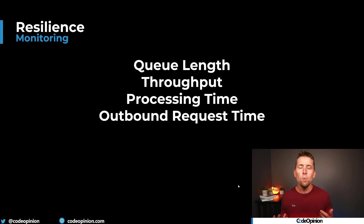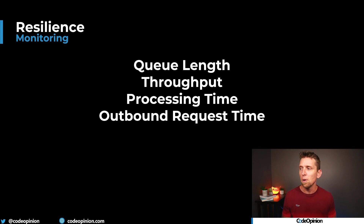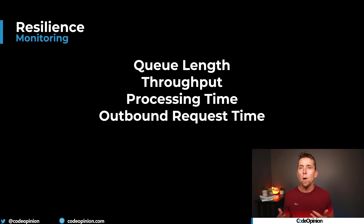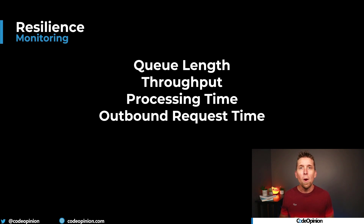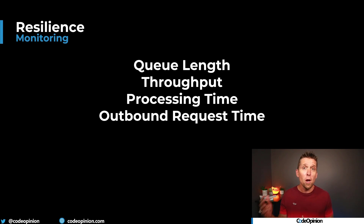Other things like queue length, throughput, and processing time — but it's not just about queues. It's anything outbound, like making external HTTP calls: having metrics on request time and latency for those services, and latency on any given route or endpoint in your system. So you can know what things look like when they're performing normally and then see when things start going offside. You need metrics on every part of your system so you know not just when something has gone wrong, but when something is about to go wrong — so you can get ahead of it. You want to be proactive.